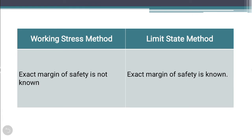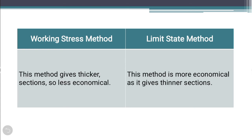In the Working Stress Method the exact margin of safety is not known, but in the Limit State Method the exact margin of safety is known. That is why the Limit State Method is very effective and economical, whereas the Working Stress Method gives a thicker section and is less economical. In the Limit State Method, more economical sections are produced, avoiding wastage of steel.